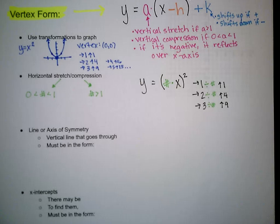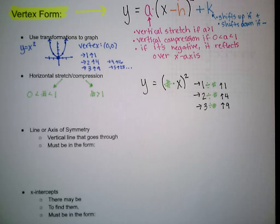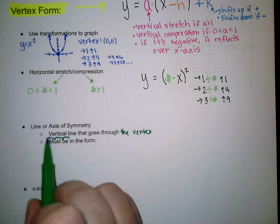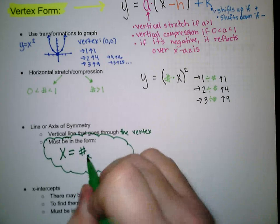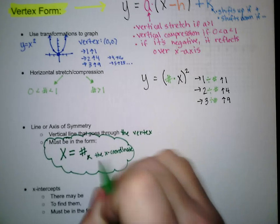Each of these parabolas has symmetry — not necessarily about an axis, but across a vertical line that goes through the vertex. This is going to be a vertical line that goes through the x-coordinate of the vertex. Since it's a line, it has to be in the form x equals some number, and that number is going to be the x-coordinate of the vertex.